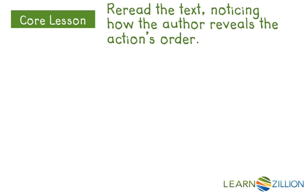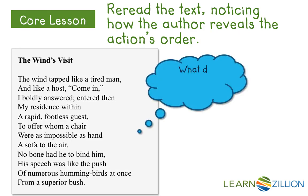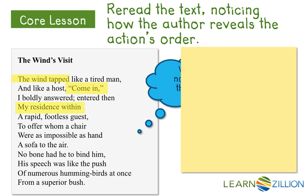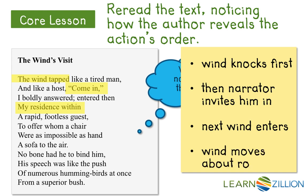Our first step is rereading the text and noticing how Emily Dickinson reveals the action's order. Here we have the first part of the poem. As I reread, I'm asking: what do I notice about the action's order? I've highlighted each time there's a new action between the narrator and the wind. First the wind knocks, then the narrator invites him in, next the wind enters, and then the wind moves about the room. There's a very linear, chronological order to how the events play out.